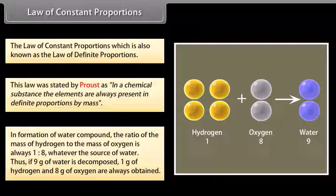Thus, if 9 gram of water is decomposed, 1 gram of hydrogen and 8 gram of oxygen are always obtained.